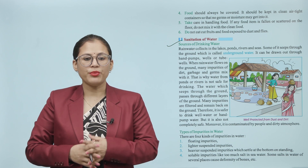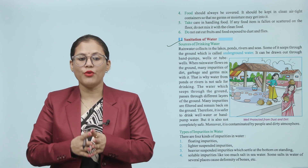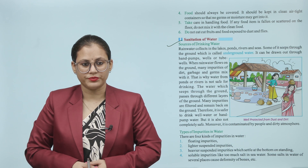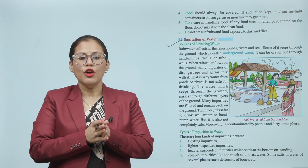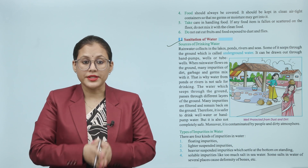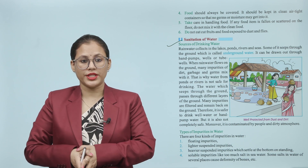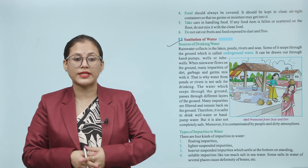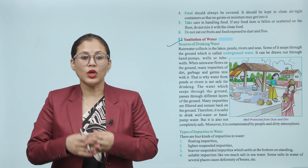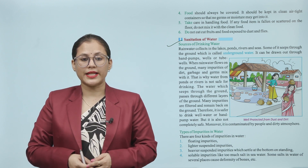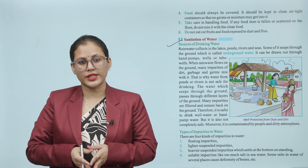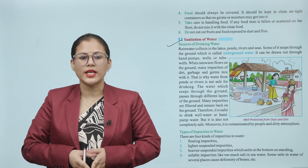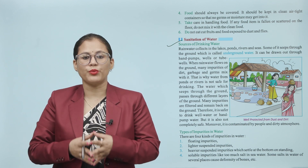Types of impurities in water. There are four kinds of impurities in water: floating impurities, lighter suspended impurities, heavier suspended impurities which settle at the bottom on standing, and soluble impurities like too much salt in sea water. Some salts in water of several places cause deformity of bones.